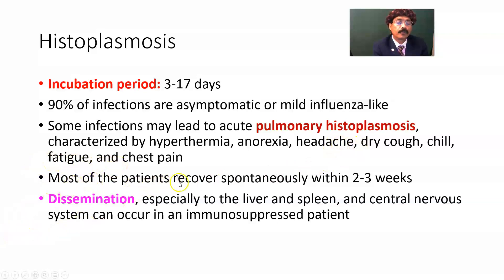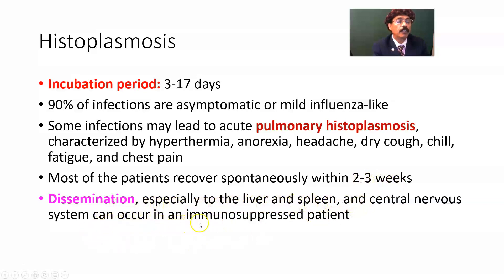Most patients recover spontaneously within 2 to 3 weeks. However, dissemination — especially to the liver, spleen, and central nervous system — can occur in an immunocompromised patient.